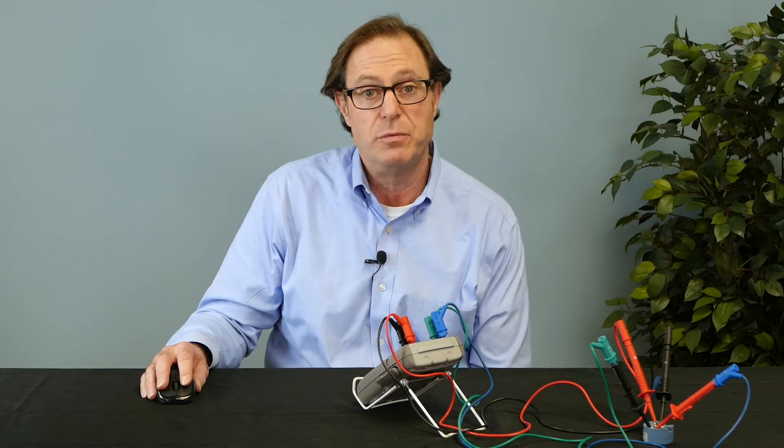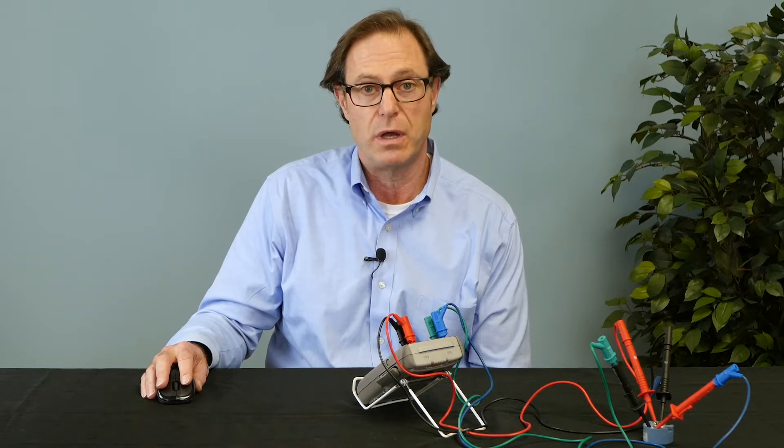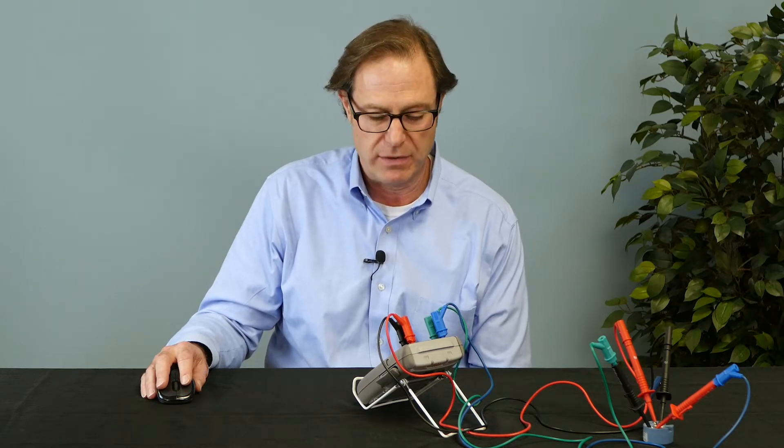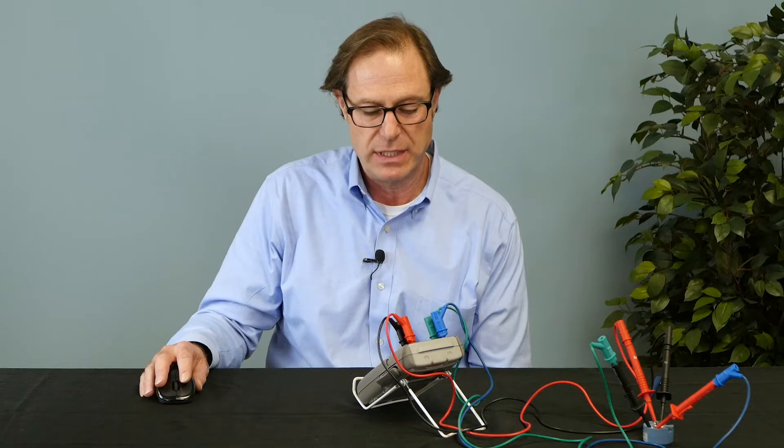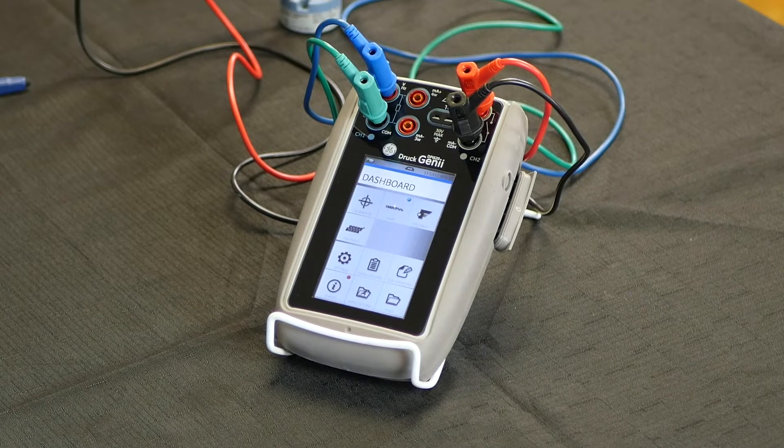I'm going to go into the HART communicator function on the unit itself. Before I do, on the dashboard, I just wanted to point out that as options, the DPI 620 can also have a foundation field bus and a profibus communicator.